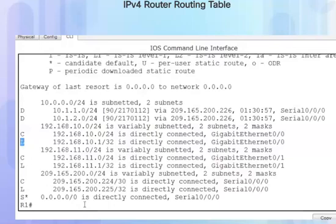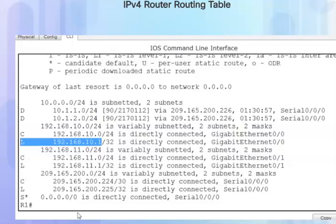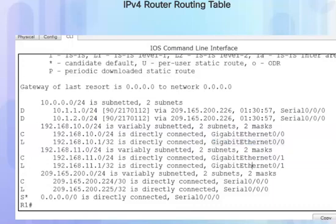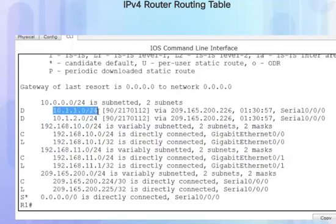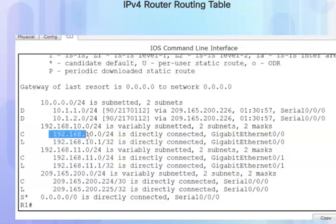The capital L stands for the link local address. Notice 192.168.10.1, as opposed to the connected network 192.168.10.0 — this is the local interface address connected to gigabit 0/0. The destination networks are the first part of each entry: the 10.1.1.0 destination network, the 10.1.2.0 destination network, the 192.168.10.0 destination network, and so on.